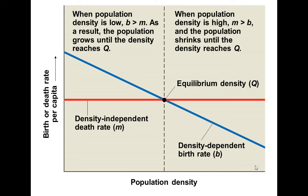When population numbers are low, birth rate is higher than the density-independent death rate and the population grows. As more individuals are born and the population grows, it reaches equilibrium density. Once population exceeds that equilibrium and resources become insufficient, the density-independent death rate exceeds the density-dependent birth rate, the population shrinks, and more individuals die until equilibrium density is re-established.